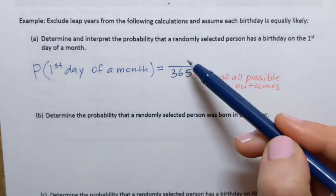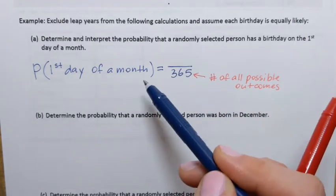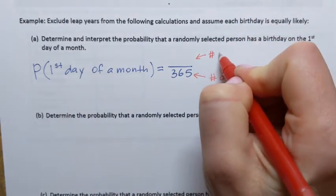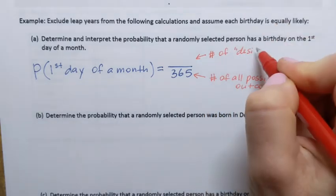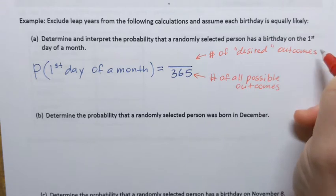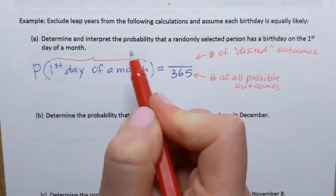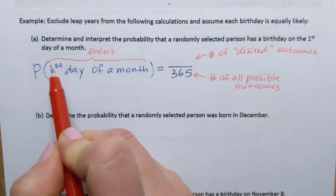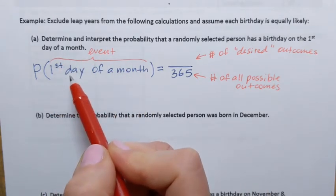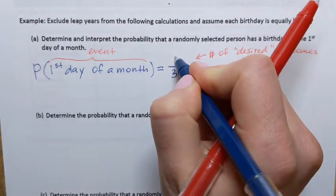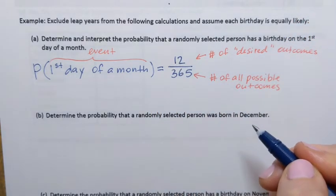The numerator of the formula is the number of desired outcomes — those that correspond to the event. The event here is that a person has a birthday on the first day of a month. How many days like that do we have in a year? It can be January 1st, February 1st, March 1st, April 1st, and so on. So there are 12 such days. In our event, we have 12 outcomes.